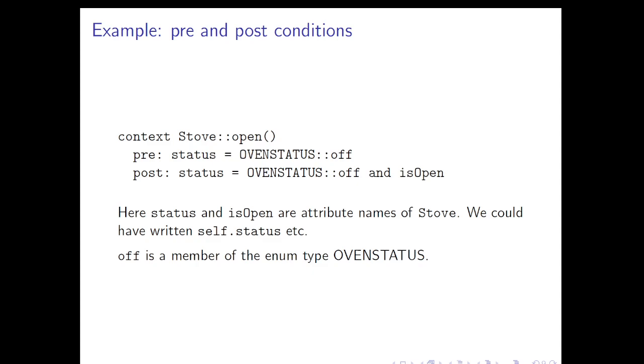As we shall see later when we talk about contracts, what's going on here is that we're saying the writer of the open method has to ensure that if the precondition holds before the operation is invoked, then the post condition will be guaranteed to hold after the operation returns.